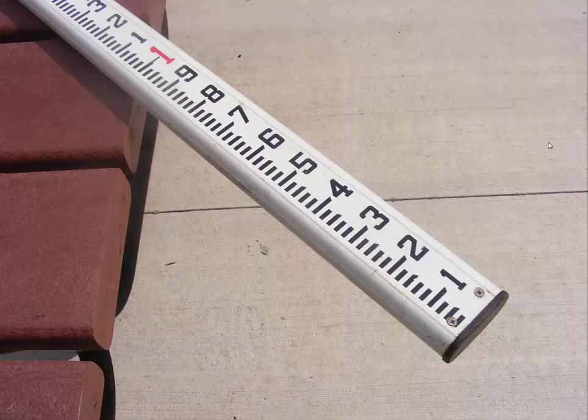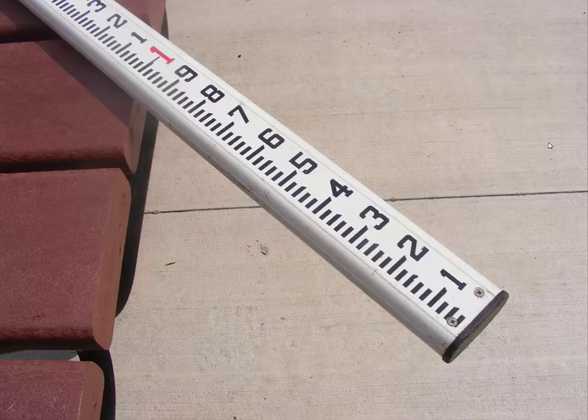First of all, notice that the typical level rod is graduated in decimal feet. You can see here that the fractional parts of a foot are labeled 1 through 9. If this rod were graduated in inches, you would also see the numbers 10 and 11 below the red number 1.